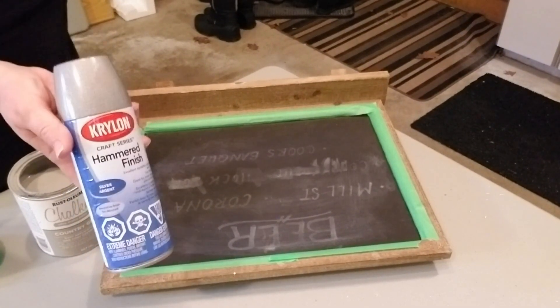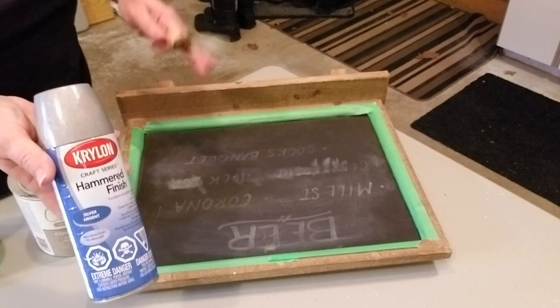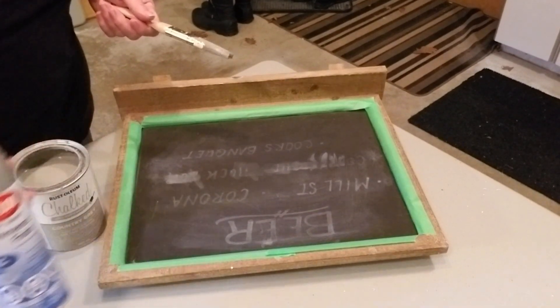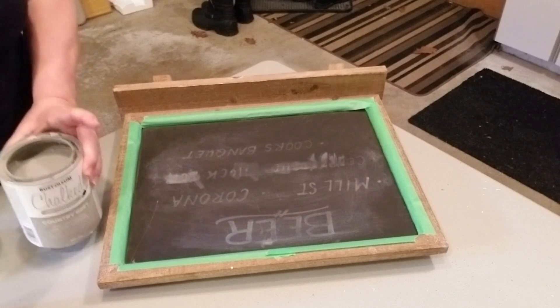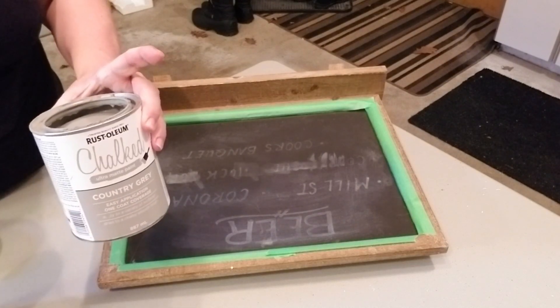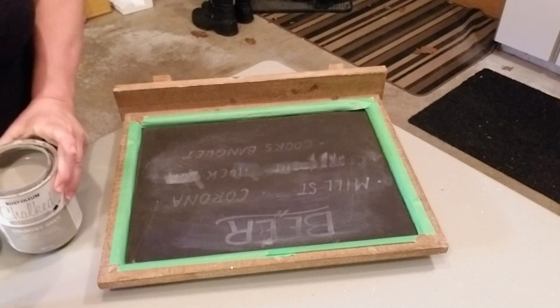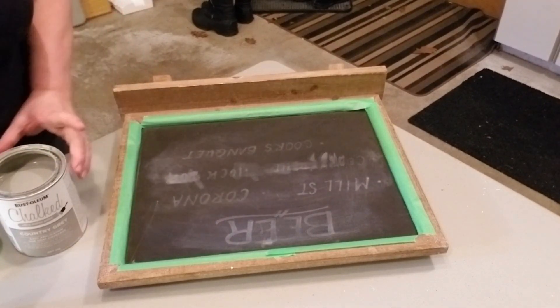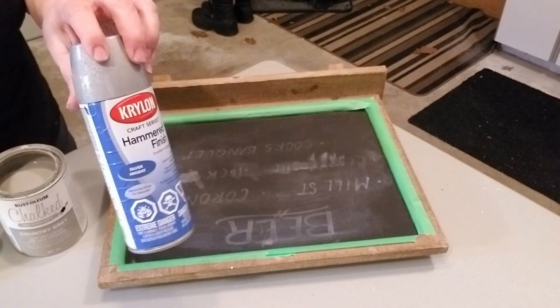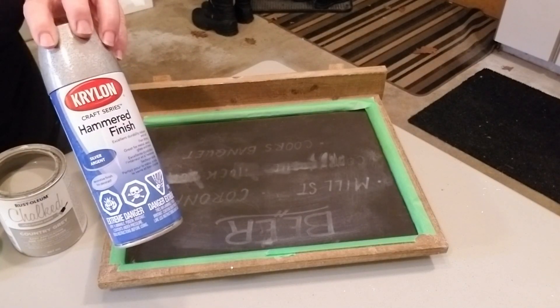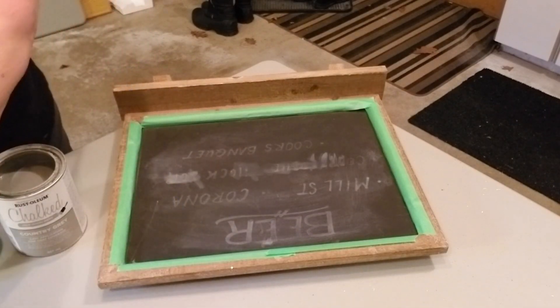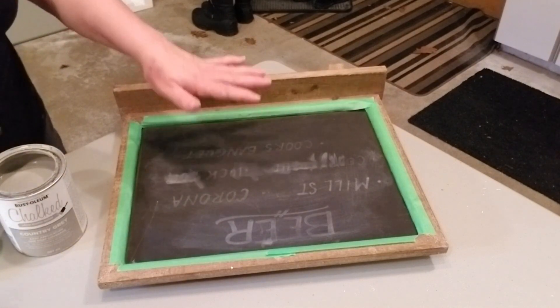Whenever I use spray paint and I want to make sure I get good coverage on something, I always use a base coat of chalk paint, usually gray. This spray paint isn't exactly inexpensive and it just saves me a lot of money. So I'm going to go ahead and give this one coat of chalk paint.